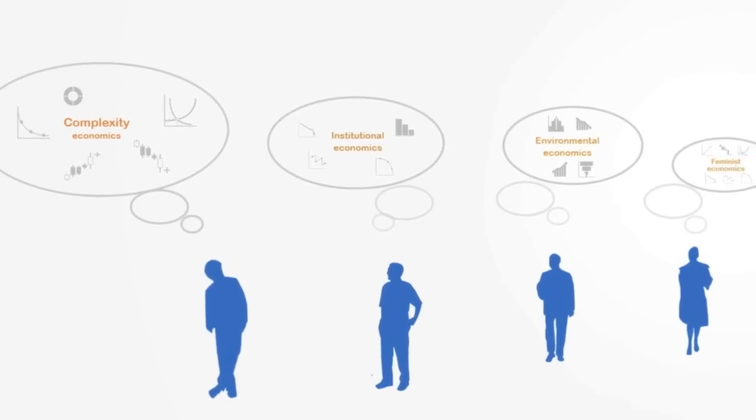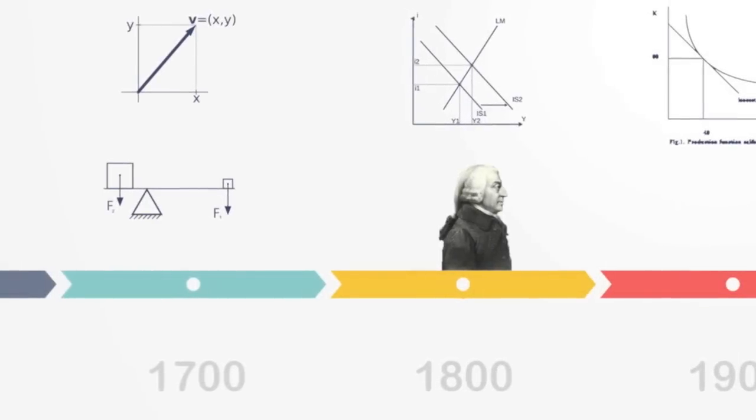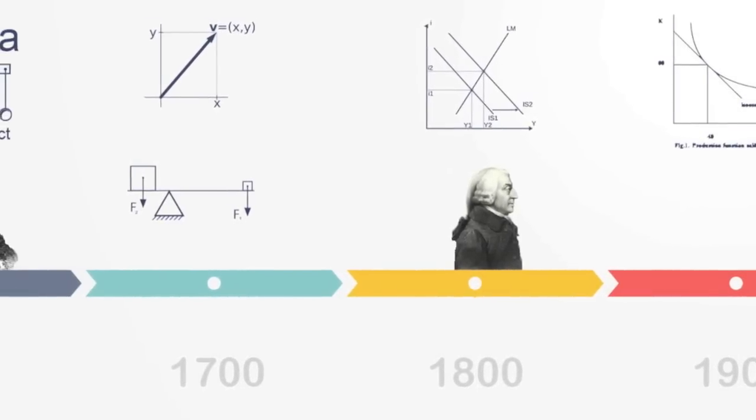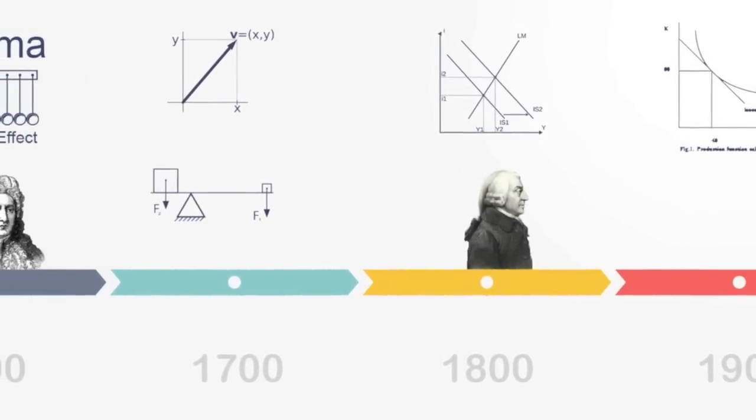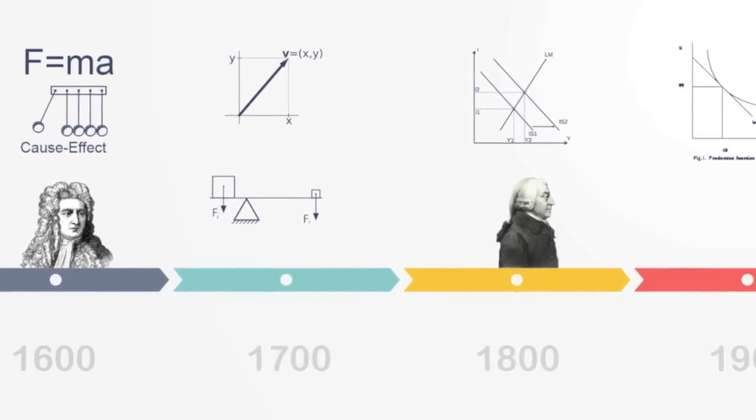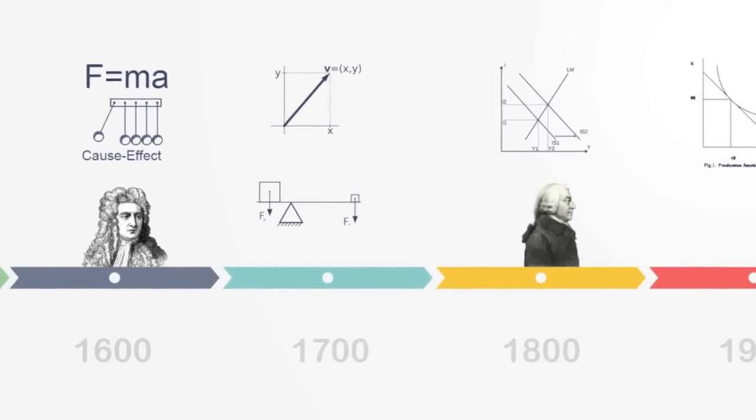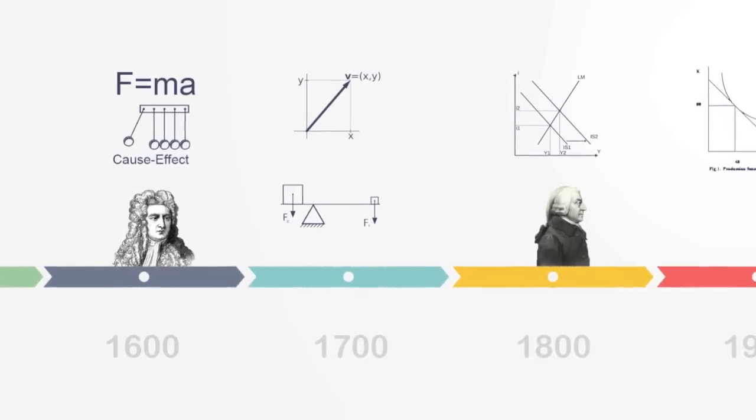So let's first talk a bit about our standard approach to economics. The foundations to modern economics date back to the 18th century where it borrowed much of the formal apparatus of mathematics and the natural sciences, especially from physics with its classical mechanistic view of the world in terms of linear and deterministic cause and effect.